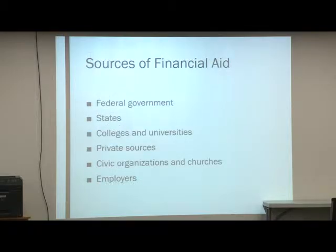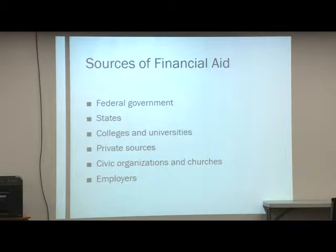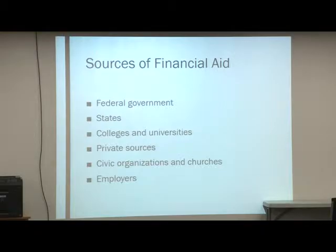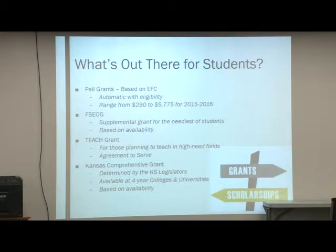For dependent students there are two components: the parent contribution as well as the student contribution. They are looking at income and tax information for both students and parents. It's calculated using data from the FAFSA and a federal formula. So if a family makes $50,000, your EFC is not going to be $50,000 — there are income protection allowances built into that formula because part of that money may need to go to a mortgage, food for the family, and so on.